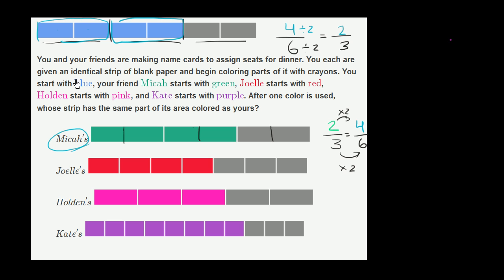So Mika has colored in the same amount that I have. Now let's see whether any of these other fractions are the same. So Joelle has colored in four out of one, two, three, four, five, six, seven. Four out of seven.